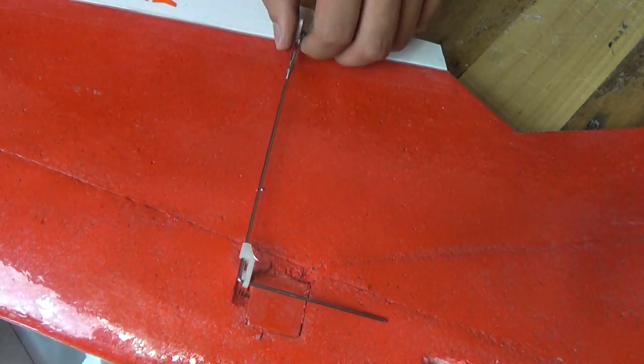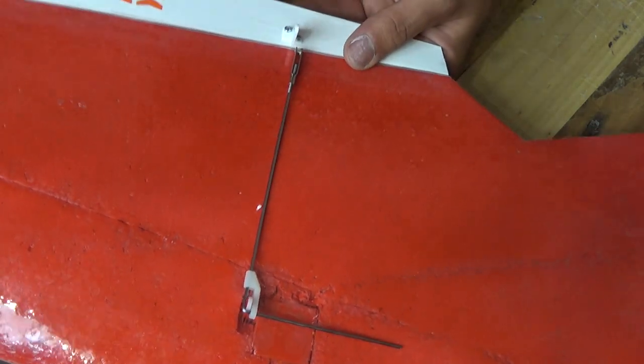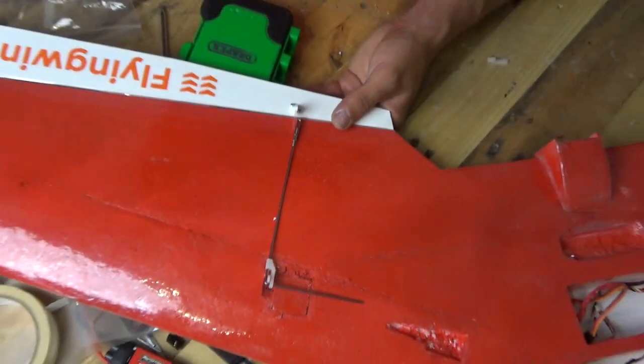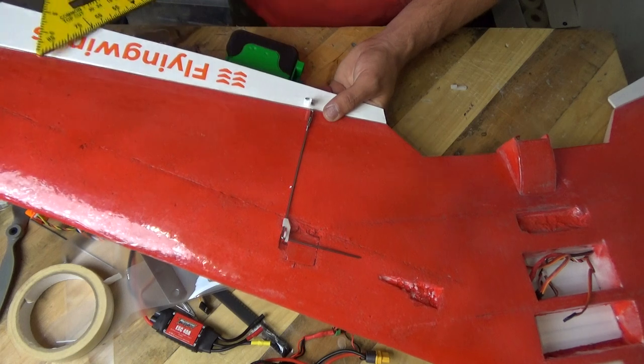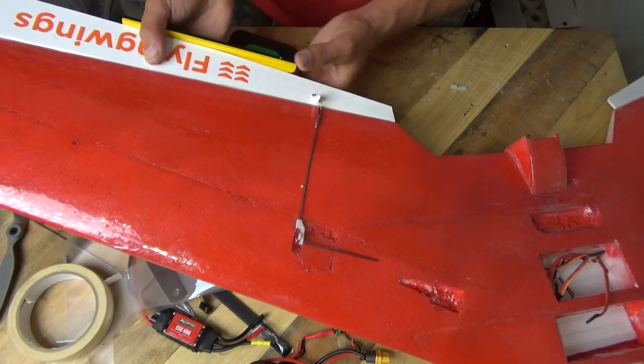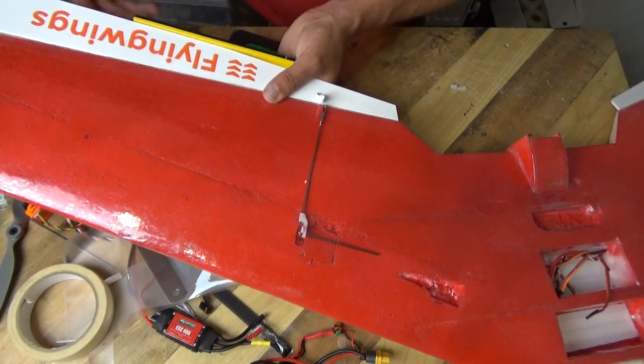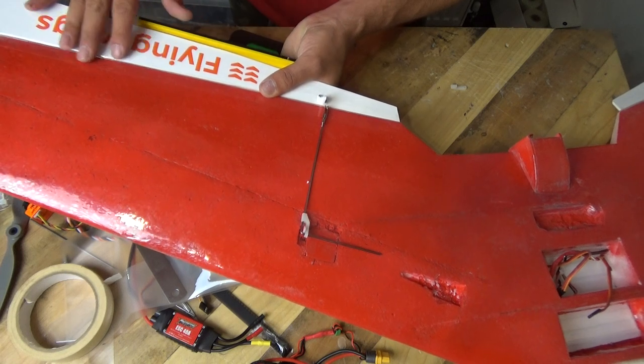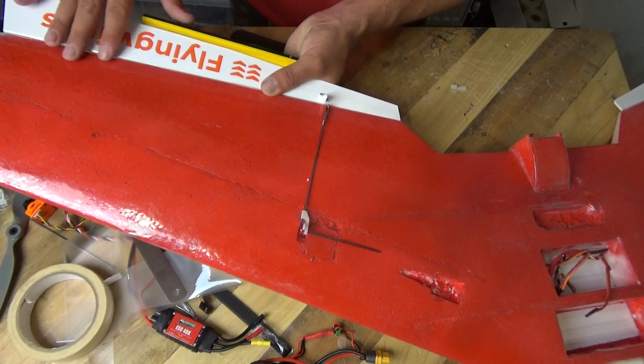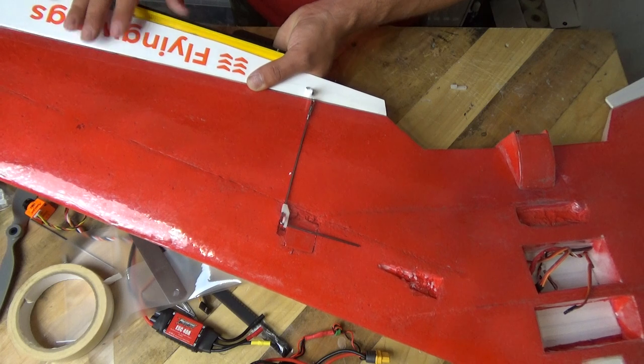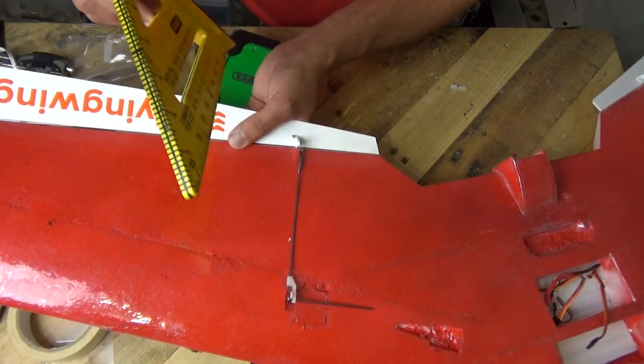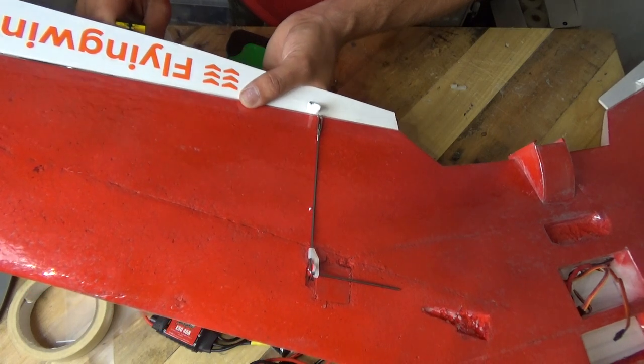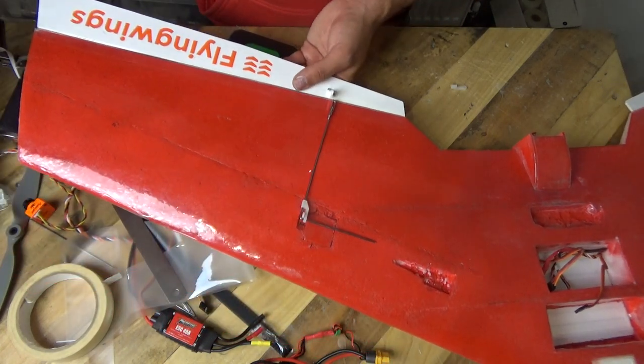Also a big tip for you: how do you know how much reflex to put in this rear elevon on a flying wing? If you get a flat surface and put it underneath and then continue the flat surface around, chances are you're going to be very close to the angle of reflex which you need in your elevon. A nice flat surface underneath the actual wing itself, use a straight edge or a ruler, and you'll be pretty damn close.